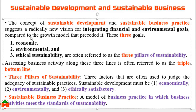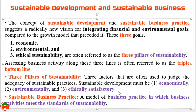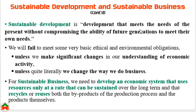The concept of sustainable development and sustainable business practice suggests a radically new vision for integrating financial and environmental goals. The three goals — economic, environmental, and ethical sustainability — are often referred to as the three pillars of sustainability, also known as the triple bottom line approach. In case of sustainable business practice, we need to establish a business model in which business activities meet the standards of sustainability. Sustainable development is the development that meets the needs of the present without compromising the ability of future generations to meet their own needs.